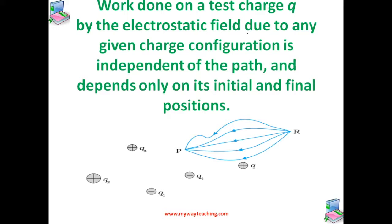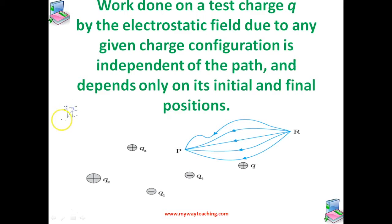Consider any general static charge configuration. We know the potential energy of a test charge q in terms of the work done on the charge q, and this work is proportional to charge q. The force at any point is given by q into E, where E is the electric field at that point due to the given charge configuration. So it is convenient to divide the work by the amount of charge q so that the resulting quantity is independent of q.